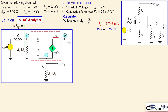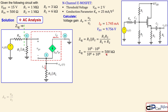Looking into the gate, the impedance ZIG is the parallel combination of R1 and R2. With each being 1 megaohm, ZIG equals 500 kilohms. The overall voltage gain Vo over Vi can be written as VG over Vi times Vo over VG. VG over Vi is a simple voltage division: ZIG divided by RIN plus ZIG.